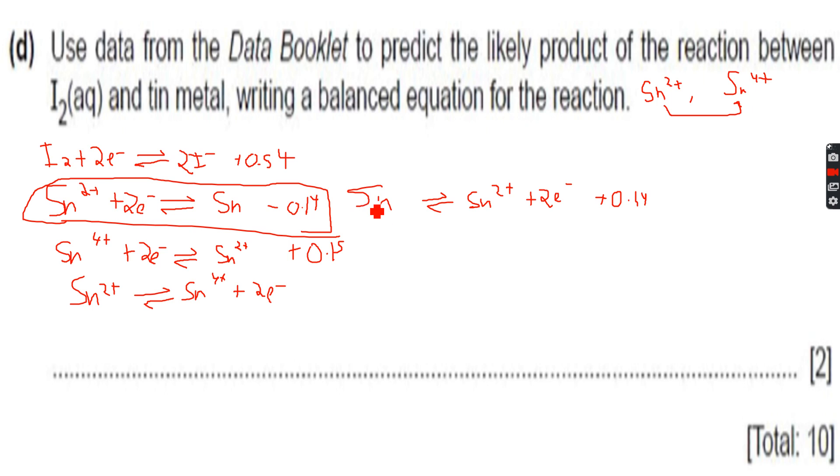The tin oxidized to Sn2+, but then we noticed after looking at the reaction of Sn4+ and Sn2+, we notice that if the I2 is in excess, the tin can be oxidized to Sn4+. The Sn2+ can be further oxidized to Sn4+ because the oxidation number is increasing by 2.